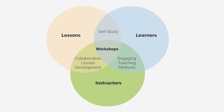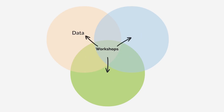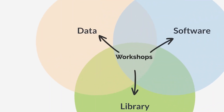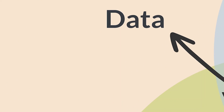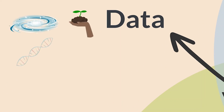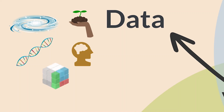There are three kinds of workshops: Data, Software and Library Carpentry. Data Carpentry is domain-specific and offers curricula in astronomy, ecology, genomics, social sciences and geospatial domains.